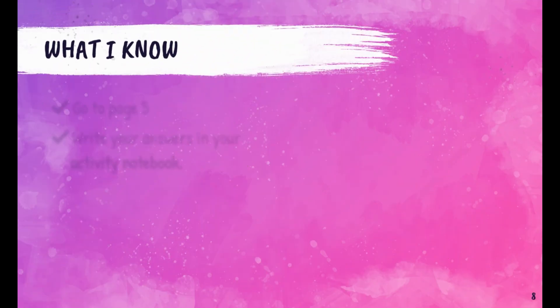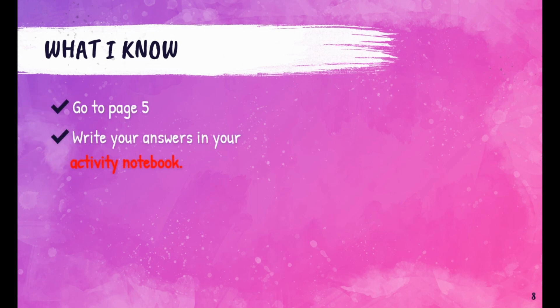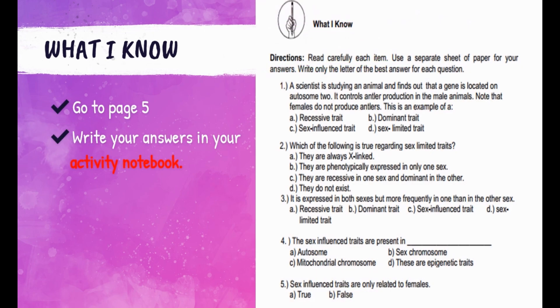Before we go on, let's find out what you know about the topic. Go to page 5 of your modules. Read carefully each item. Use a separate sheet of paper for your answers. Write only the letter of the best answer for each question and write your answers in your activity notebook.